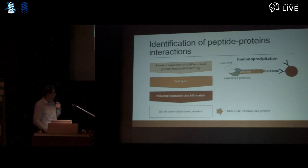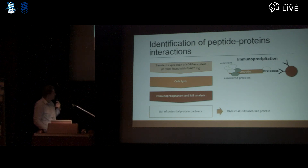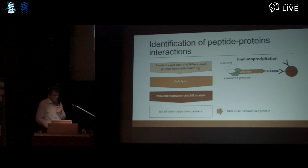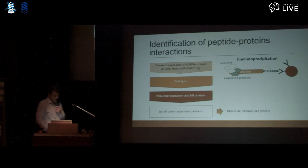To investigate the mechanism of peptide action beyond morphological changes, we performed protein partner analysis. We transiently expressed sORF-encoded peptides fused with FLAG-tag in moss cells, then performed immunoprecipitation and mass spectrometry analysis. For this peptide, we found interesting protein partners, including RUB small GTPase-like proteins.